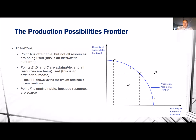Points B, D, and C are all attainable. They take place along the Production Possibilities Frontier, and it is there that all resources are being used, which means that that is an efficient outcome.